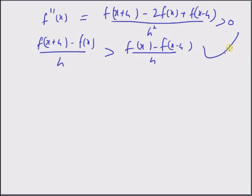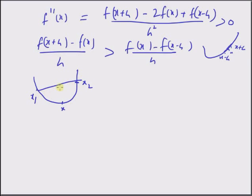If you have two points f of x minus h and x somewhere in between, the slope of the line connecting these two points and the slope of the line connecting the next two points can be compared, and the slope of the first line is always greater than the slope of the second line. By moving the second point x minus h further left and repeating this process several times, we reach a situation where x minus h is at x 1, x plus h is at x 2, and x is in between. The chord is always above the curve.